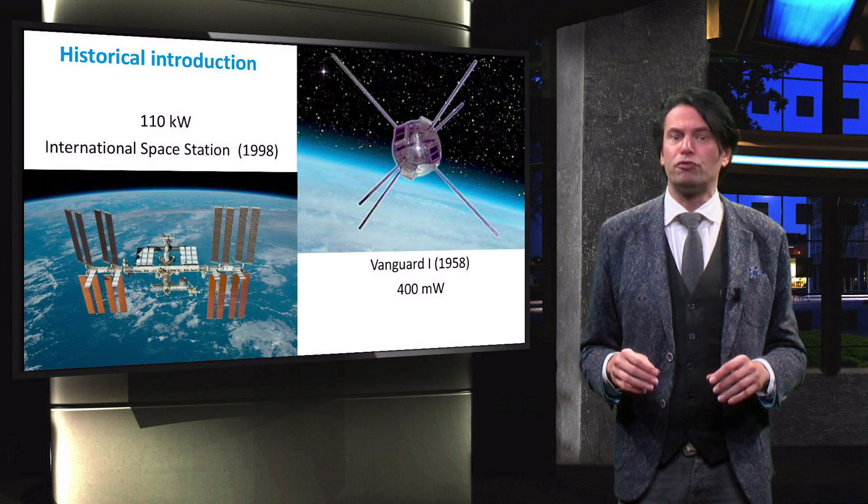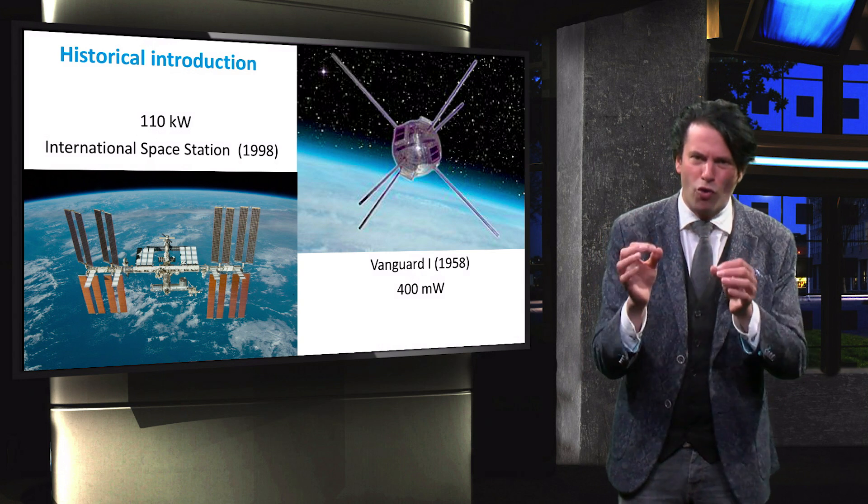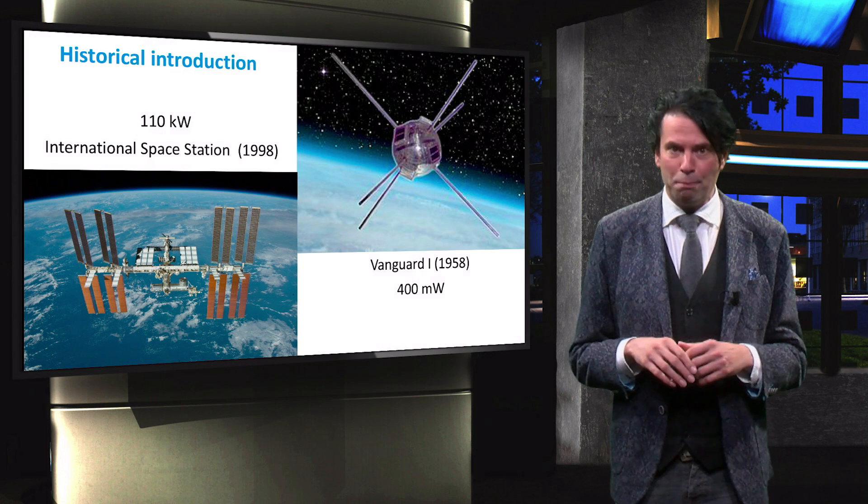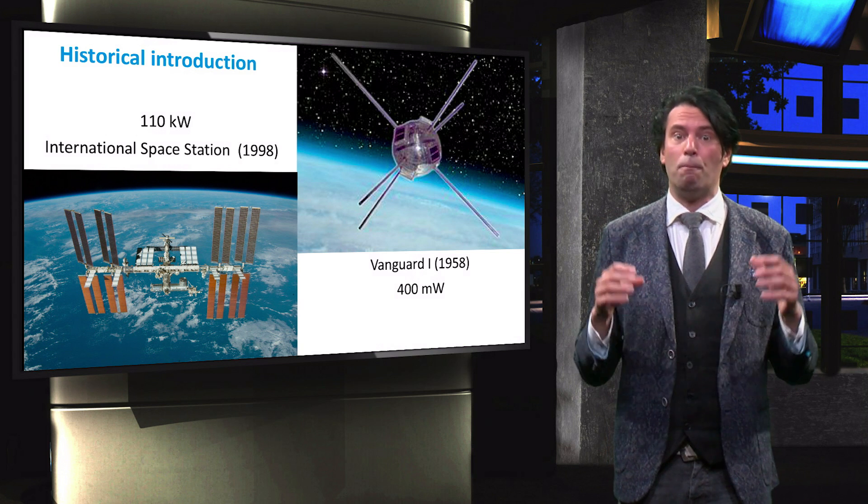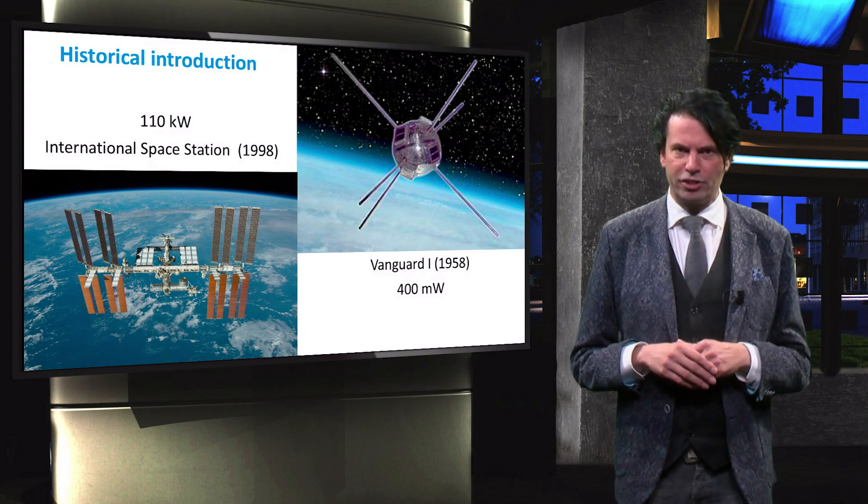Since the 90s, PV research for space applications has focused on III-V and multijunction devices, which have higher efficiencies and are more tolerant to the radiation environment.